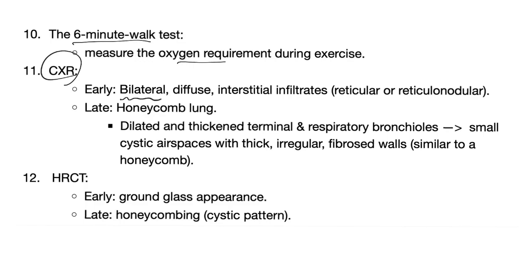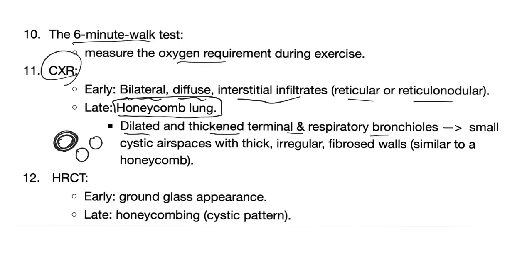On chest X-ray, early on you find inflammation — bilateral diffuse interstitial infiltrates, either reticular or reticulonodular. Later, you have the famous honeycombing: dilated and thickened terminal respiratory bronchioles forming cysts surrounded by thick walls and fibrosis, looking like a honeycomb. On high-resolution CT scan, early you see ground-glass appearance; later you see honeycombing with a cystic pattern.